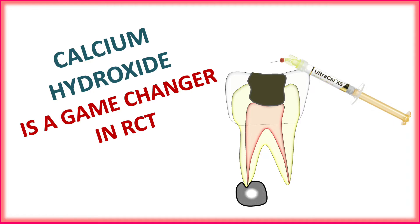In cases of periapical changes in tooth, it is very difficult to make the canal infection free. In such cases, we use calcium hydroxide and MTA dressing — all of these are very useful. Let's begin and understand what calcium hydroxide actually does when we inject it into a tooth canal.